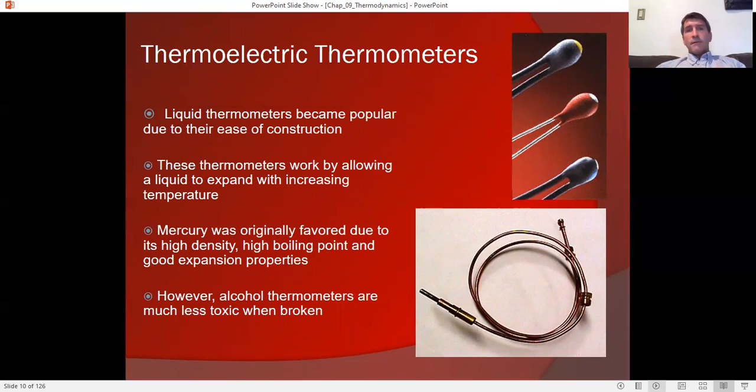Here are some other thermometers. All we need for a thermometer is something whose properties change as the temperature changes, and therefore we can calibrate these changing properties to some known value, some known temperature. These right here are also thermometers. These are thermoelectric thermometers which change their electrical properties, usually resistance, or if it's a thermocouple, it'll actually generate a voltage. By looking at their electrical properties, we can determine what the temperature is, and these actually can be quite precise.